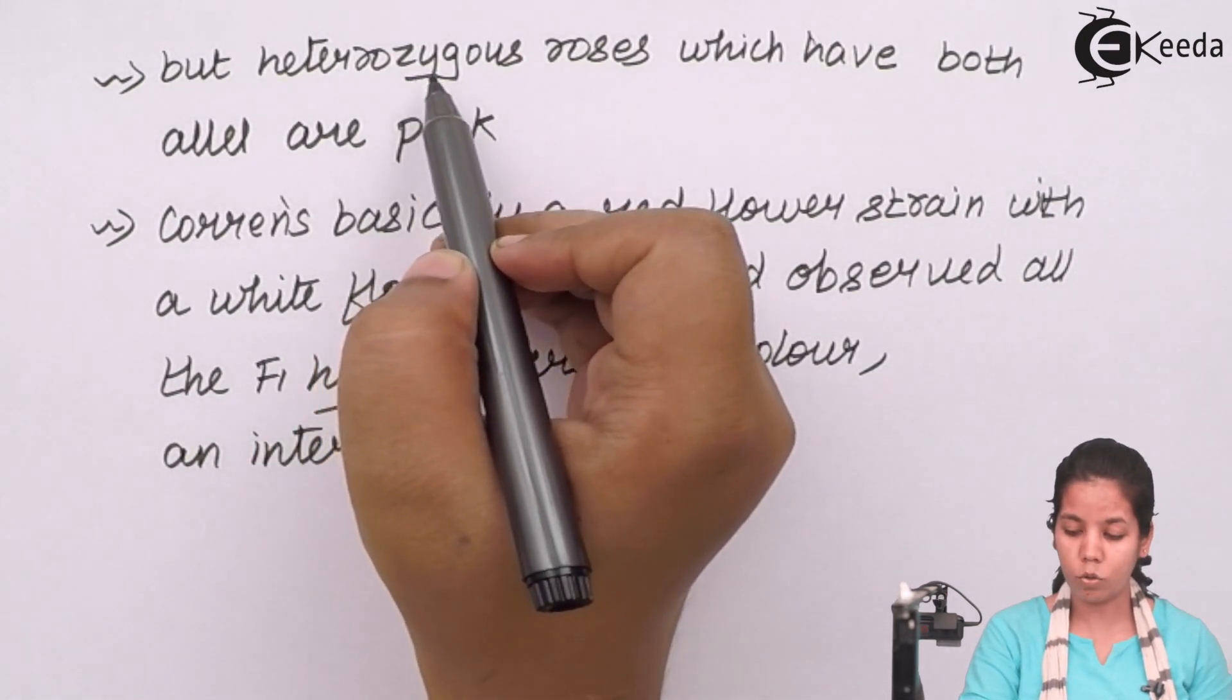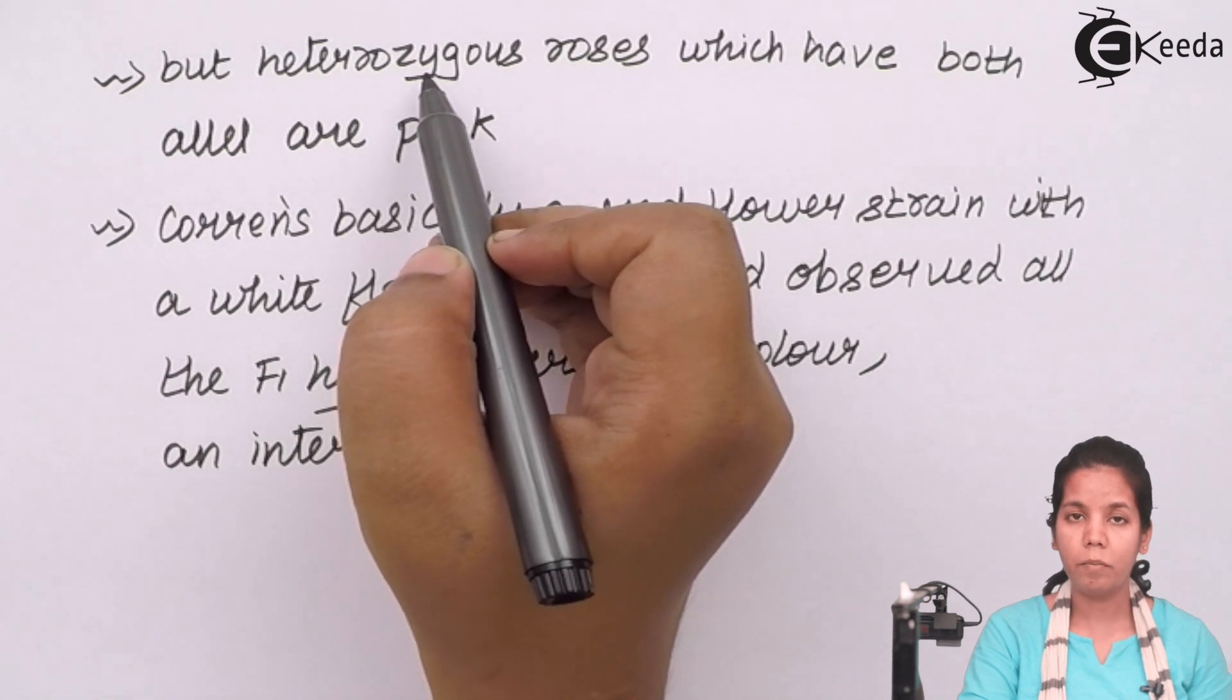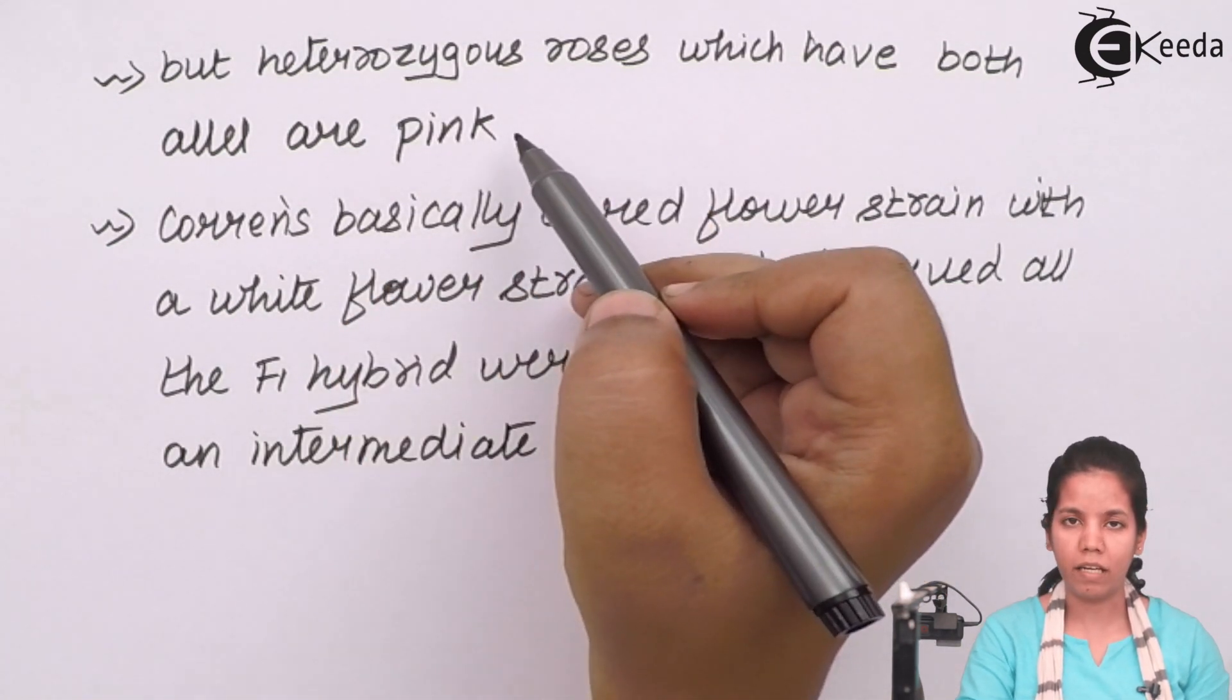Heterozygous roses are formed after the mixing of the red rose and the white rose, which were pink in color.